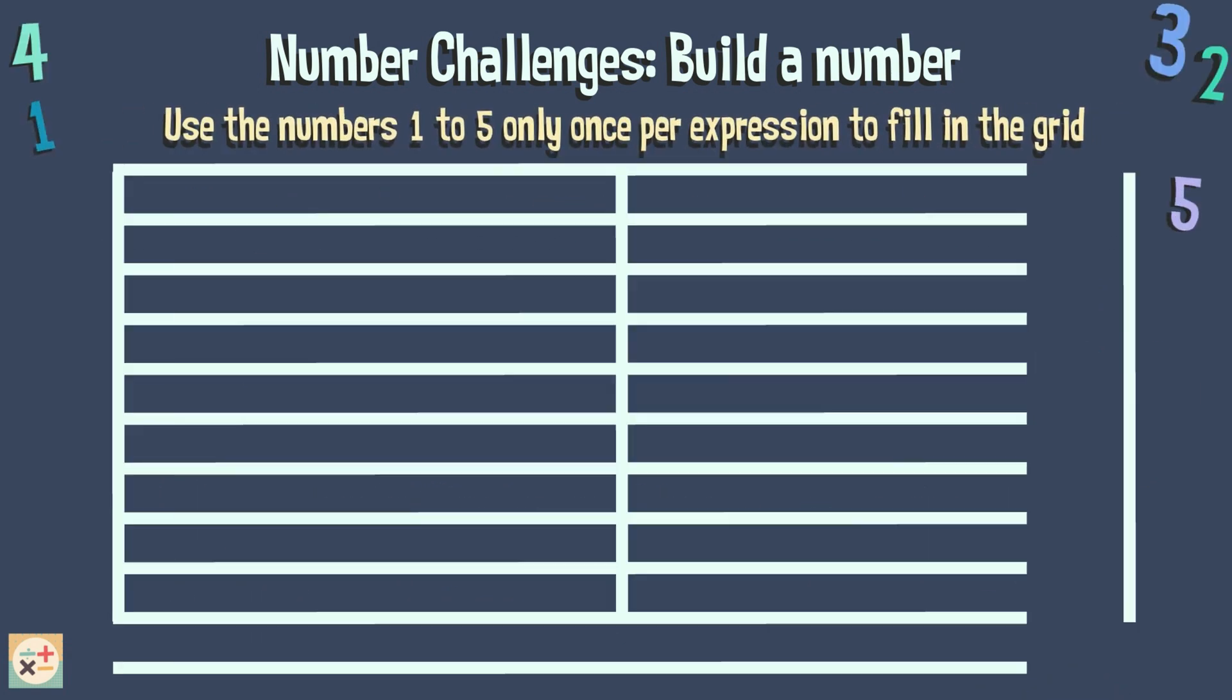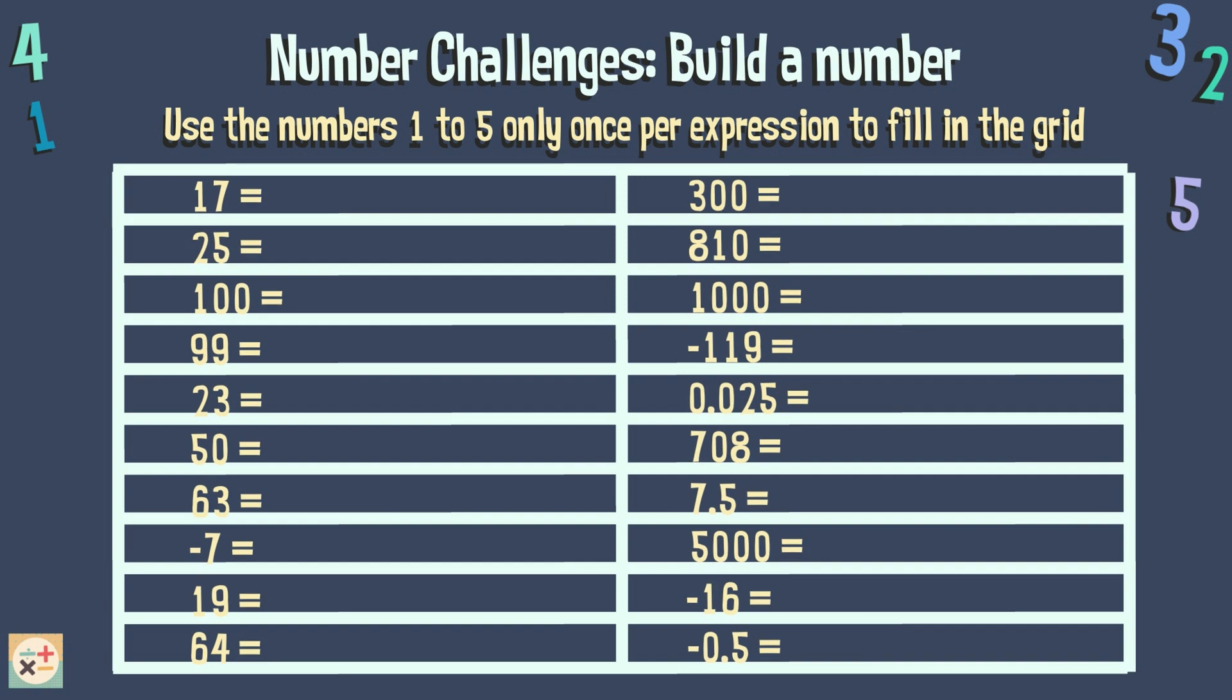For instance, let's try to make 17. One way to do it is 5 times 4, minus 3.